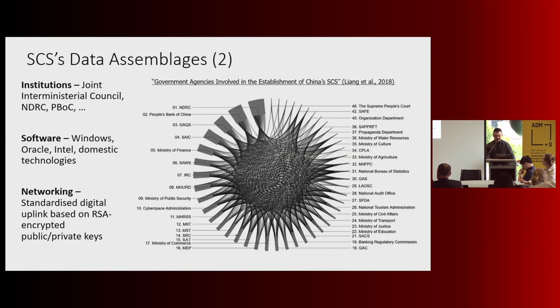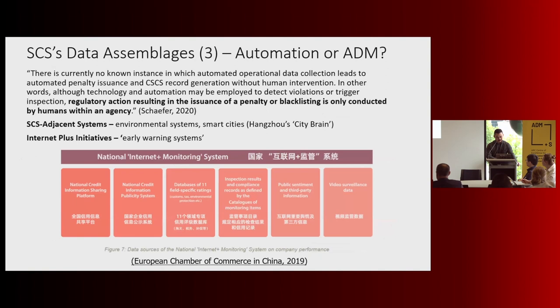Beyond the technical elements, there are also institutions. I've put up a map from Fan Liang, who wrote a great paper on the data infrastructure of the social credit system. The NDRC is now by far the most important body in the joint inter-ministerial council established around 2007. PBOC is also significant, along with many other ministries.